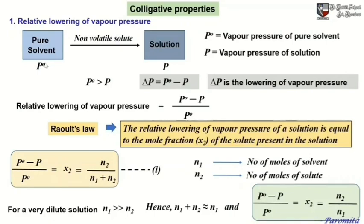P0 is the vapor pressure of the pure solvent, whereas P is the vapor pressure of the solution. Since the vapor pressure of the solution is lowered, we can write P0 > P. Delta P equals P0 minus P, where delta P is the lowering of vapor pressure.